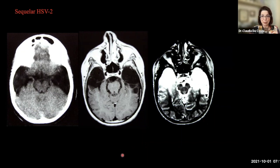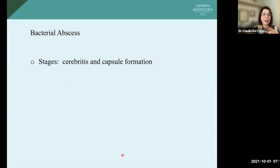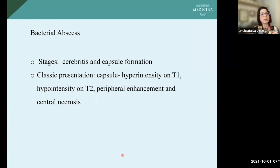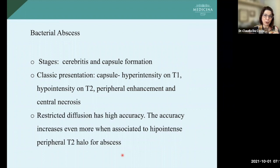Bacterial abscess. The abscess has two stages. In the first stage, you have involvement of the parenchyma with ill-defined borders and only sometimes irregular enhancement. After that, you have the host response and formation of a capsule with central necrosis — the presentation is a necrotic lesion with peripheral enhancement. The capsule can be hyperintense on T1, hypointense on T2, with enhancement and central necrosis. Because of the presence of pus, the central necrosis presents restricted diffusion. Using restricted diffusion with a hypointense ring in the lesion gives high accuracy for abscess.